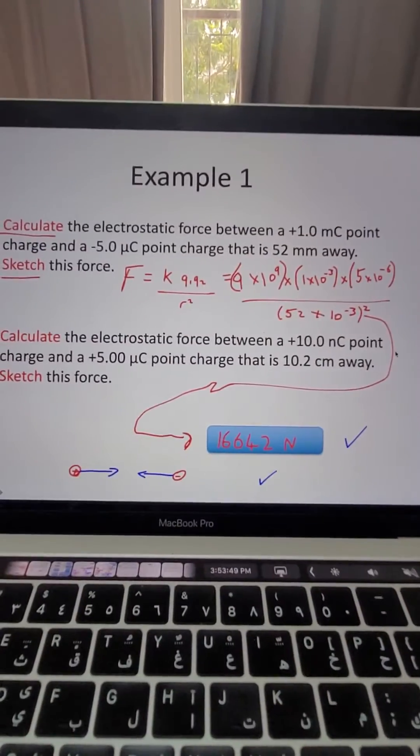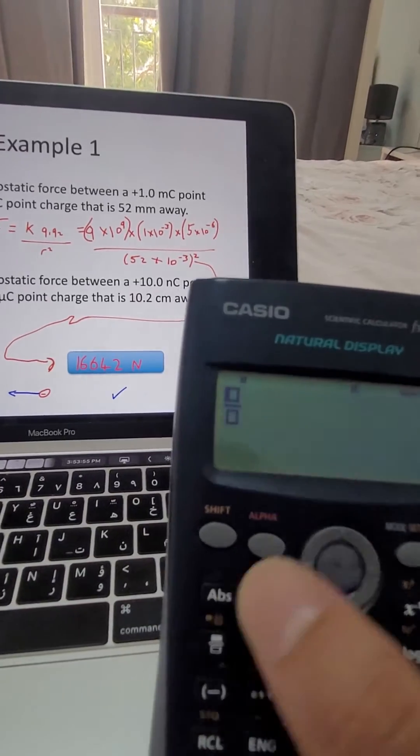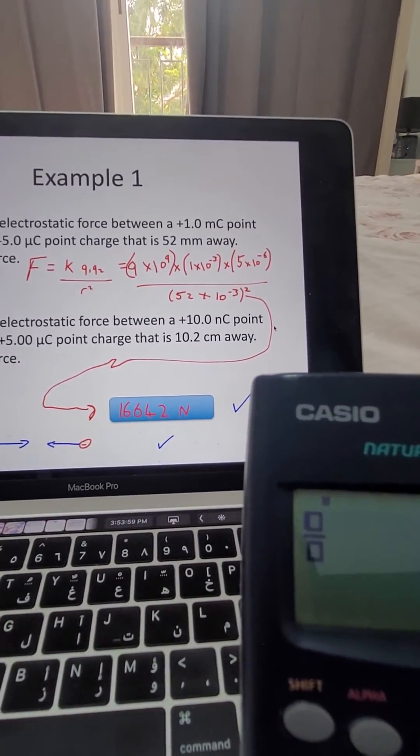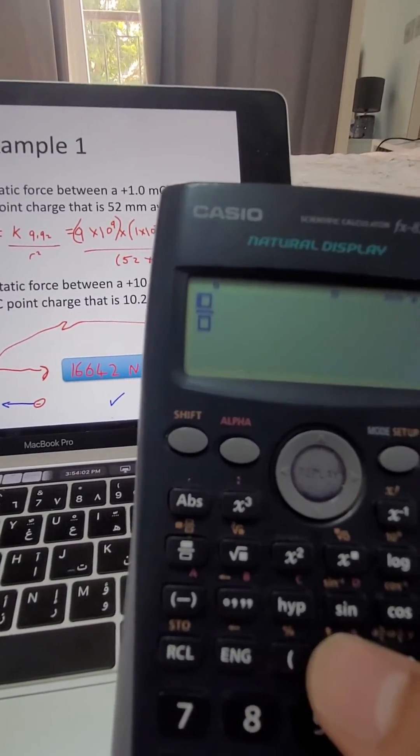Now, we've already got this formula set up, we've put the numbers in the correct place, so let's start. I'll open up the fraction here, and then I can start putting the numbers in. So the first number is 9 times 10 to the 9. I don't need the brackets, you can include them if you want by using the bracket buttons, but no need.